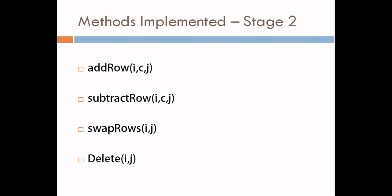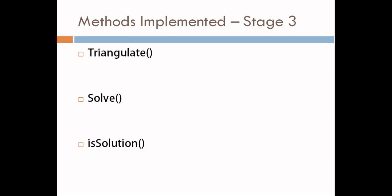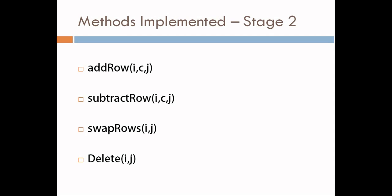The last method in stage 2 is the delete method. This deletes a node at position i, j in the sparse matrix. If there is no node at position i, j, it gives an error. Stage 3 contains the following methods. The first is the triangulate method, which uses the methods add row, subtract row, swap rows, and delete.